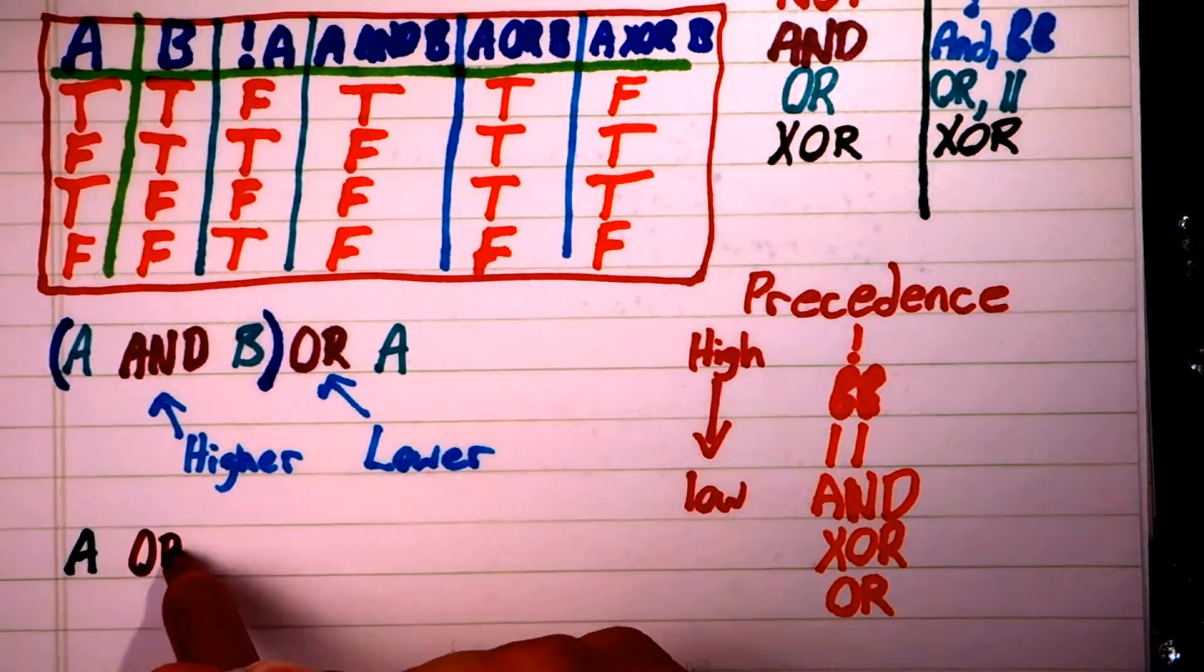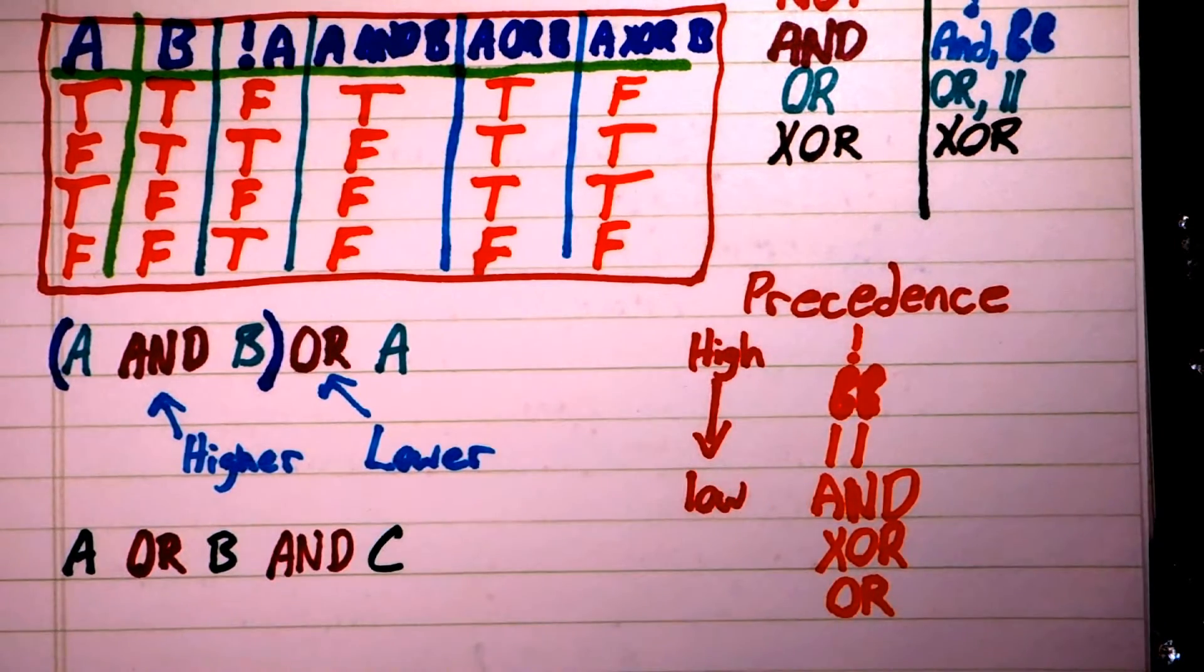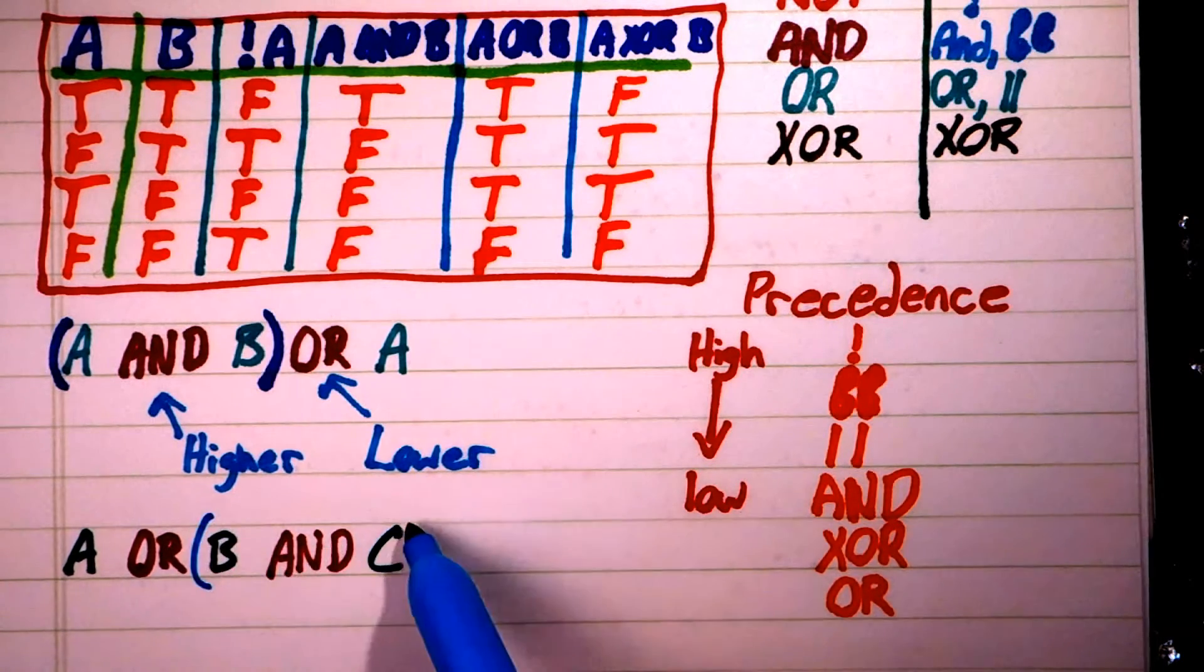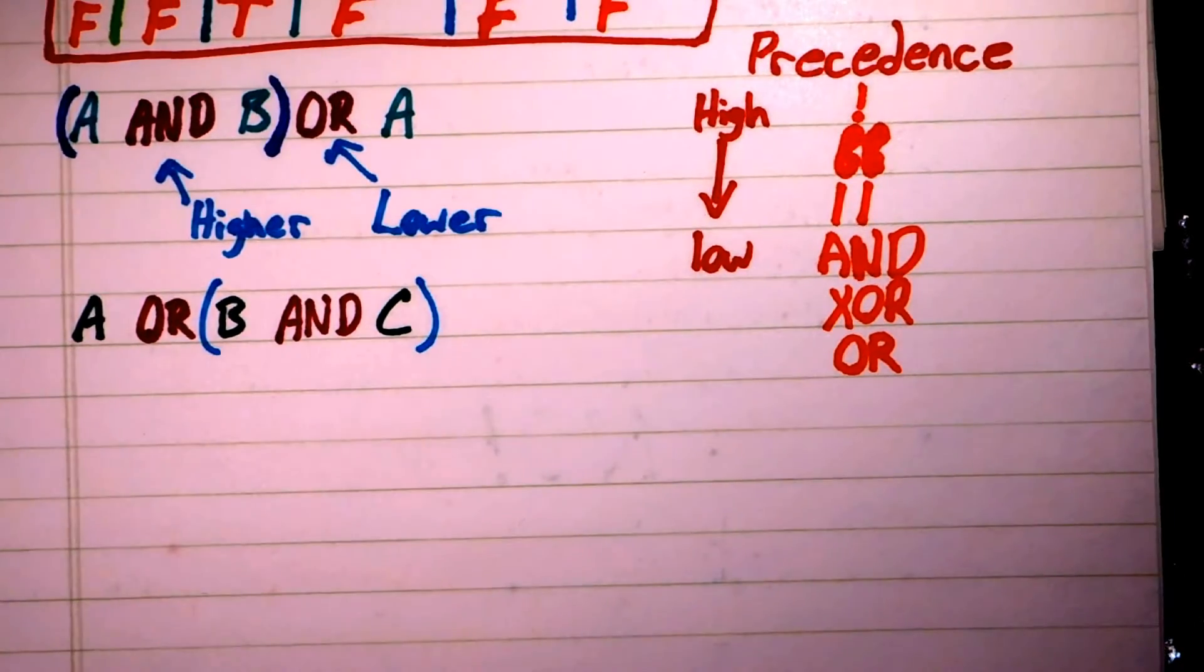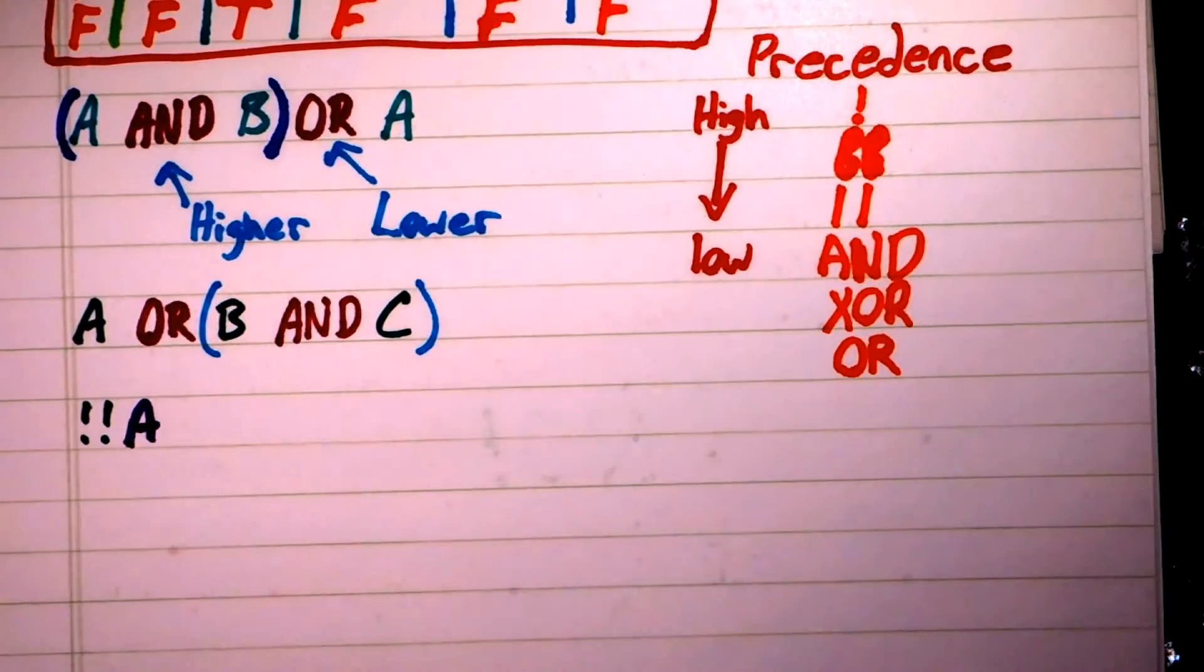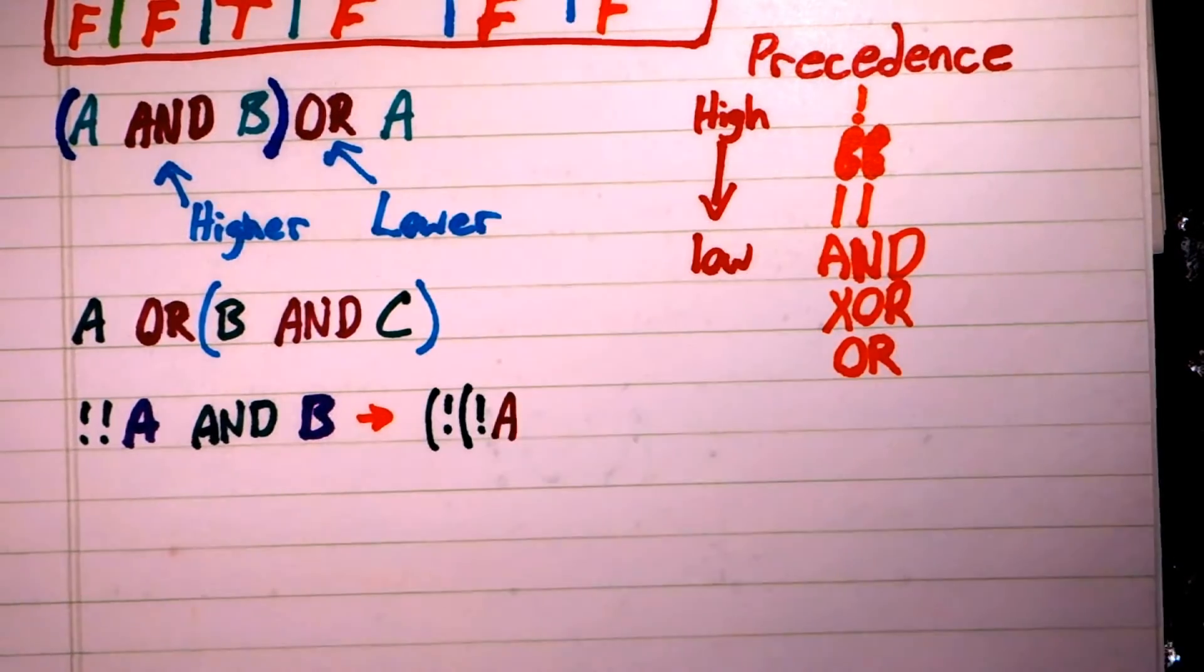Likewise, A OR B AND A becomes A OR grouped together B AND A. The NOT operator has the highest precedence, which means any time we see it, it applies to whatever is immediately on its right.